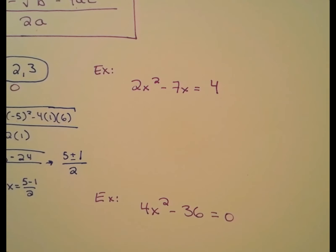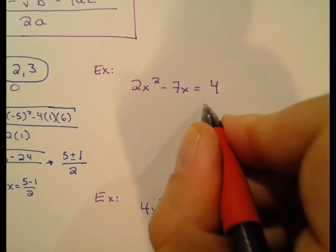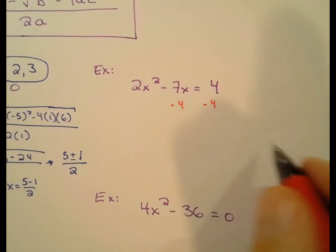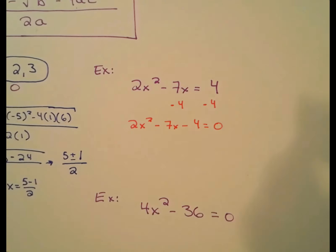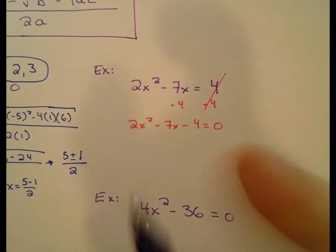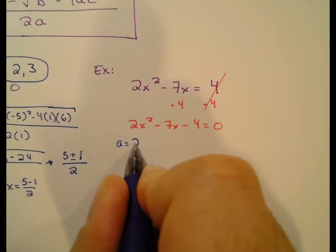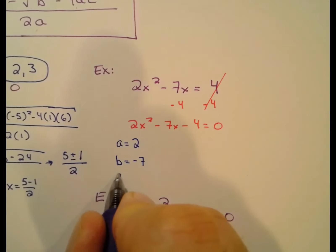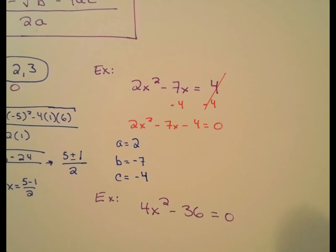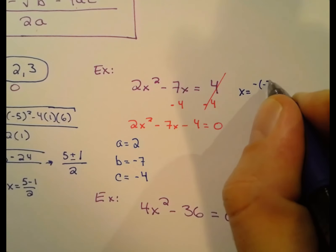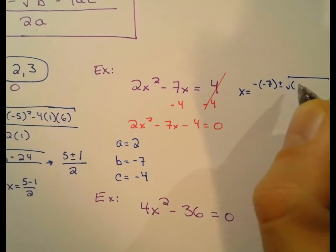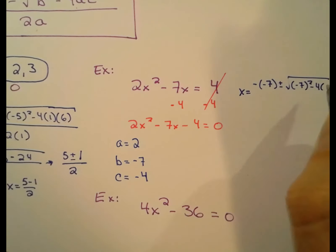In the second example, I have a four on the other side of the equal sign. Remember, to use the quadratic formula we need every non-zero term on one side and zero on the other. So the first thing I do is subtract four from each side to get zero on the right. Now a, the coefficient for x², is two; b, the coefficient for x, is negative seven; and c, the constant, is negative four. Then we apply the quadratic formula: x equals negative b plus or minus the square root of b² minus 4ac, all over 2a.